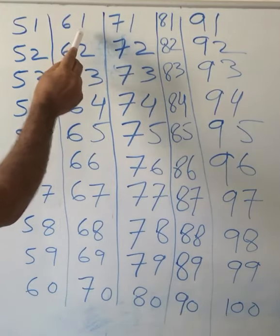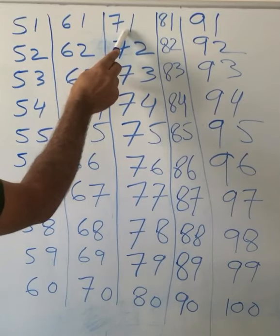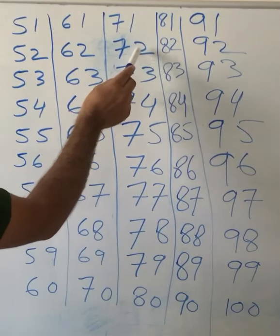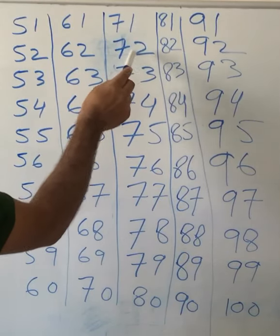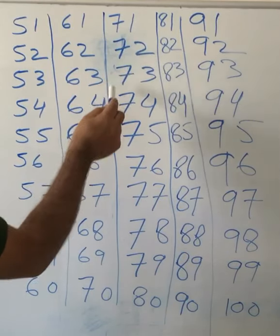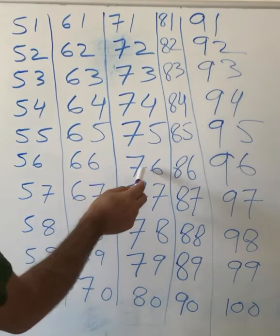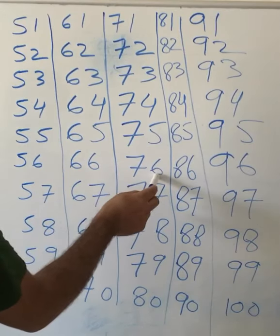Sixty-one, sixty-two, sixty-three, sixty-four, sixty-five, sixty-six, sixty-seven, sixty-eight, sixty-nine, seventy, seventy-one, seventy-one, seventy-two, seventy-three, seventy-four, seventy-five, seventy-six.